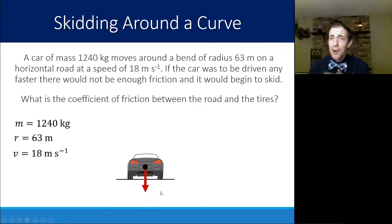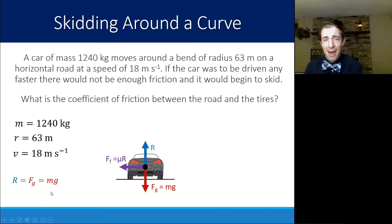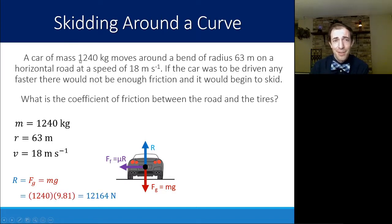Again, we can draw our free body diagram. We know that this car has mass. Going straight down, we have the force of gravity, which is mass times gravity. We know that the road is pushing up because it is not accelerating upward or downward. So that must cancel out. R is the normal reaction force. And then pointing towards the center of the circle, again, is friction. That is mu times R, the coefficient times that normal reaction force. So R is equal to FG, which is equal to mass times gravity in this case. We know those values. We can plug those in. The mass of the car times 9.81 will give us a total force for FG and for R of 12,164 newtons.